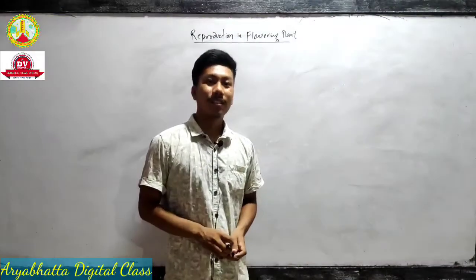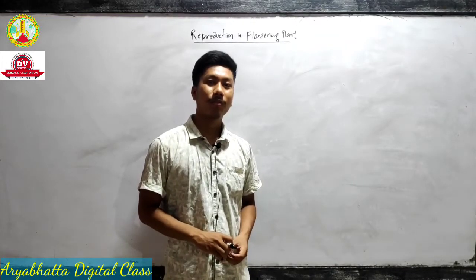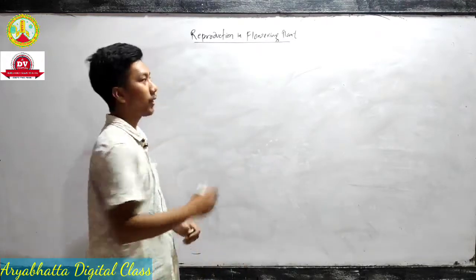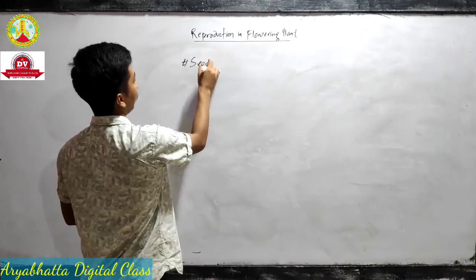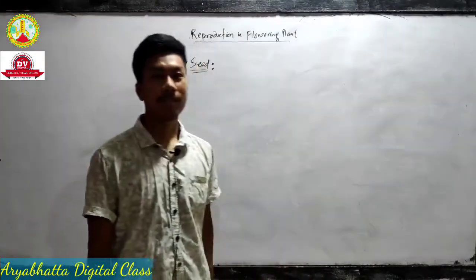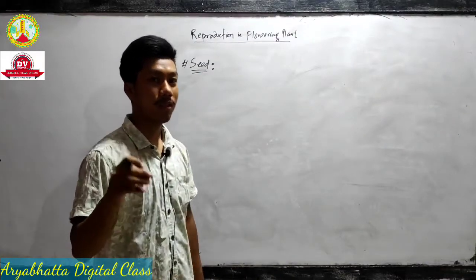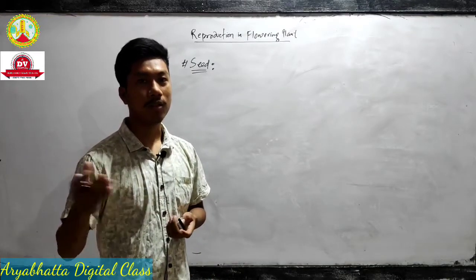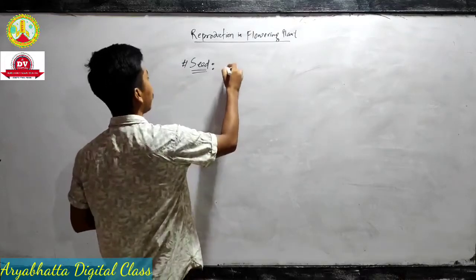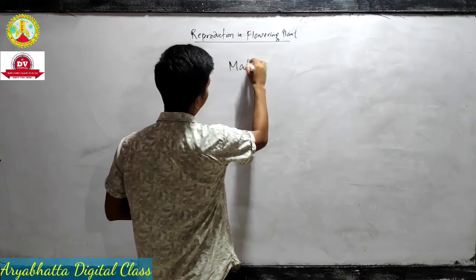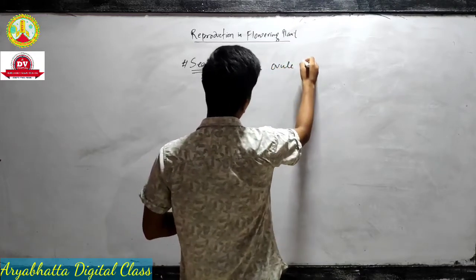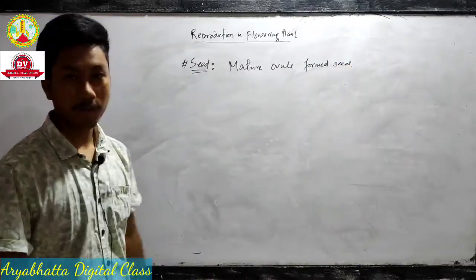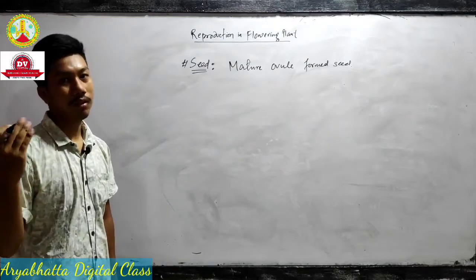Welcome back. In the last video lecture we discussed the process of formation of dicot embryo. Now from the embryo a seed will form. The next topic is seed — a seed is a mature ovule. When the ovule becomes mature it results in the formation of a seed.